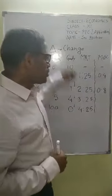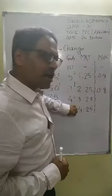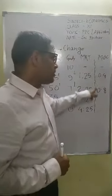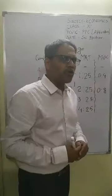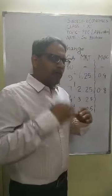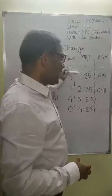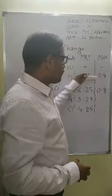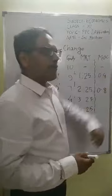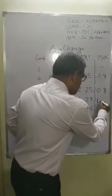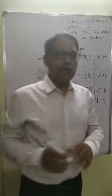The value keeps increasing because the numerator increases while the denominator is constant. So when you divide them, the value obviously increases. It will be 3 times the first value: 3 times 0.04 equals 0.12. At the last stage, the value is 4 times 0.04 equals 0.16.